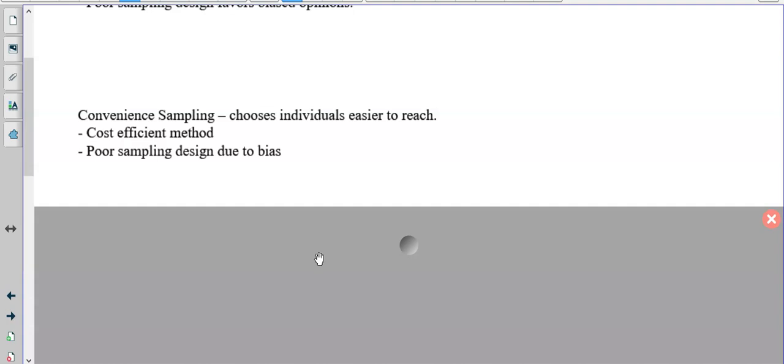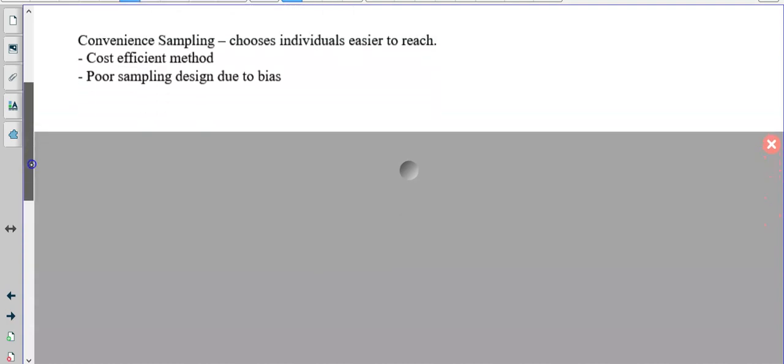Convenience sampling. Now when you do convenience sampling, it's what's really easy for you. It's cost efficient, but it's also poor sampling due to bias. So convenience would be like, you stand in the doorway of school when kids are coming to school and you take a survey. Well, what if they went to another spot to enter school? Or you surveyed at your lunchtime? Well, that leaves out people from other lunchtimes. Or you survey people at the football game? Well, what about people who don't go to the football game? You may have seen people like in the Walmart parking lot or the library parking lot doing surveys. Well, that's only getting people who shop at Walmart or go to that library or go to the library at all. So it is convenience bias.